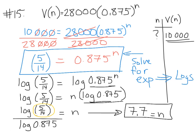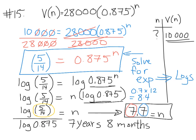So it's 7.7 years later. If the question asks to round to the nearest year, that's 8 years. But if rounding to the nearest month, we take the decimal 0.7 and multiply by 12 — since there are 12 months in a year — getting 8.4 months. So we round to 7 years and 8 months. We can double-check by plugging 7.7 into the formula and getting something close to $10,000.